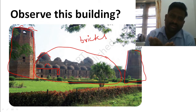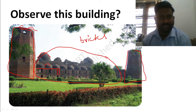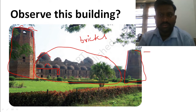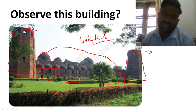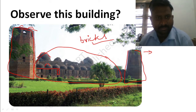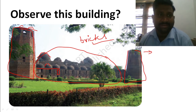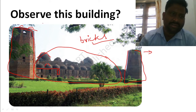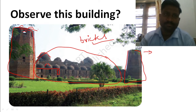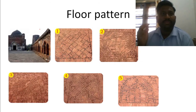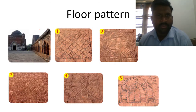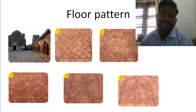One thing you have observed: all the structure is made with bricks. Secondly, the building has arcs, straight lines, and angles. You can see several arcs here. Now let us enter into the building — when we enter, we see different floor patterns.